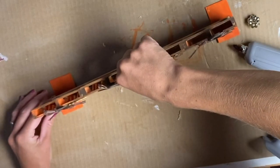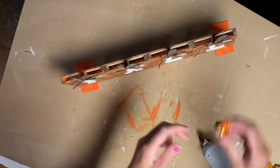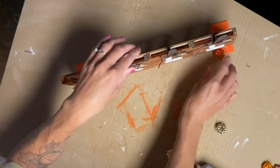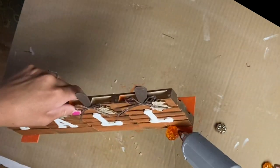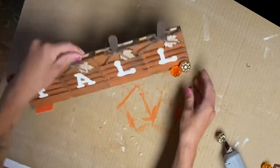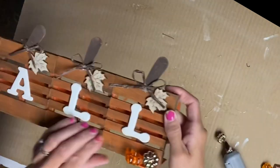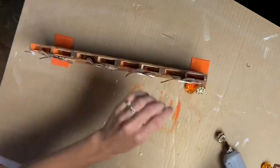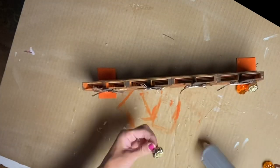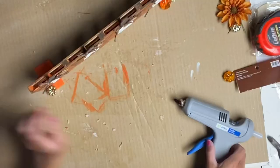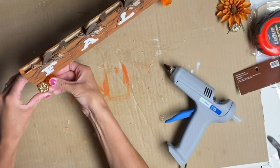I had these plastic pumpkins, they are orange and gold, and I got them in a pack from Hobby Lobby as well. I just hot glued them onto the front of the wooden tags.